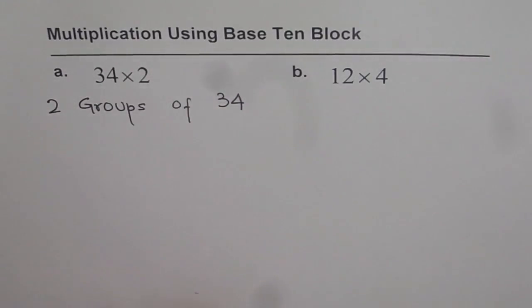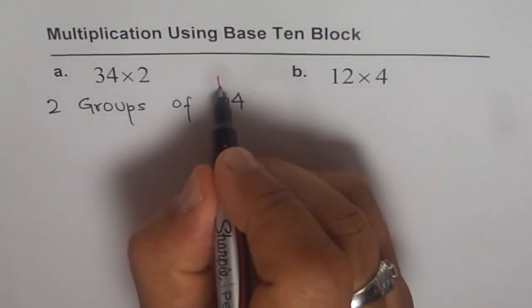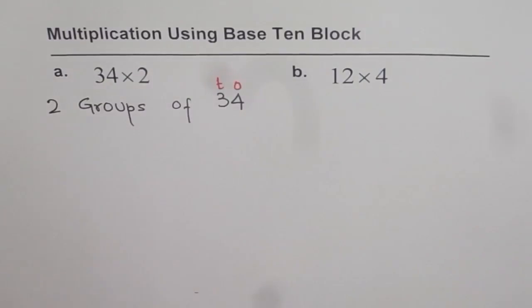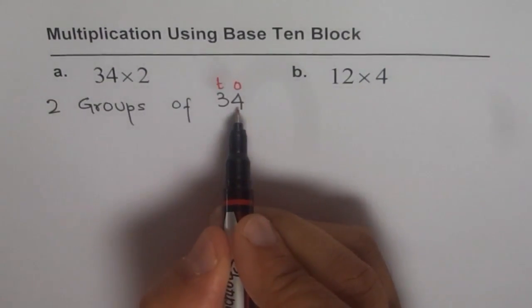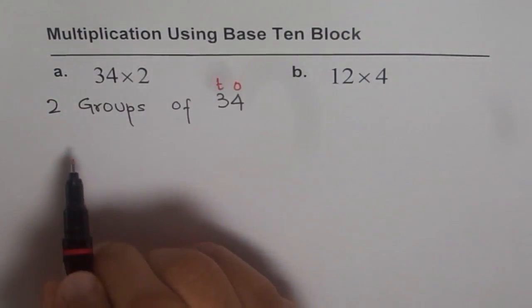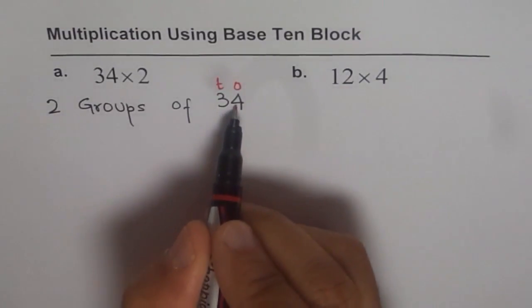Now, in base 10 block, how do you write 34? 34 means 3 tens and 4 ones, correct? That is ones position, this is tens position. So, 3 tens and 4 ones.